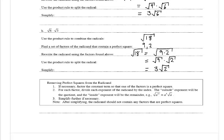It tells us the steps for removing perfect squares from the radicand. First, if necessary, factor the constant term so that one of the factors is a perfect square. Second, for each variable factor, divide each exponent of the radicand by the index — the outside exponent will be the quotient and the inside exponent will be the remainder. For example, the square root of a to the 11th equals a to the 5th times the square root of a. Then simplify further if necessary. Note: after simplifying, the radicand should not contain any factors that are perfect squares.